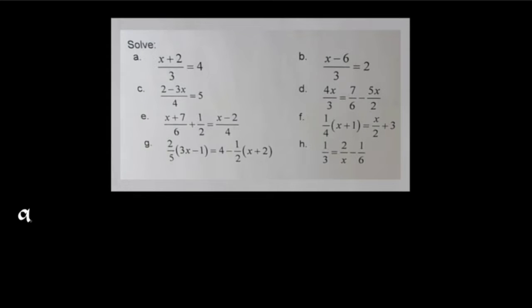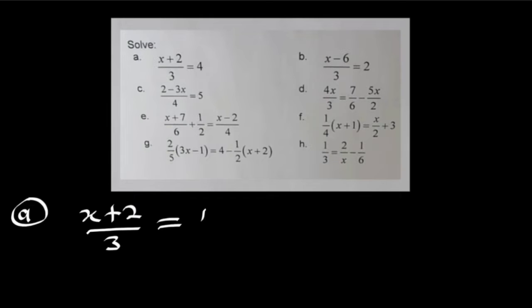The first one, you can see we have x plus 2 divided by 3, and to the right, we have 4. So the very first method I want to use is by relating the numerators and denominators. And hence, I can rationalize the right-hand side by dividing it by 1. Dividing any value by 1 will not change the value.